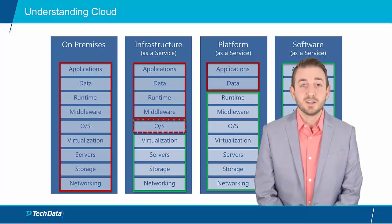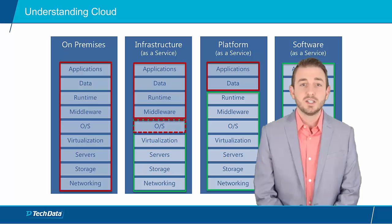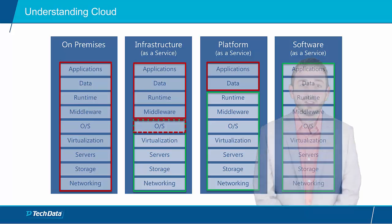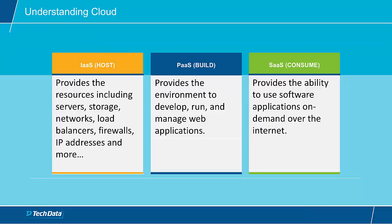It's very important to understand the differences between the infrastructure, platform, and software as a service models, as these are the core models that all the others are based on. To review: Infrastructure-as-a-Service, or IaaS, is where the customer outsources the responsibility and maintenance for all typical infrastructure components to an external cloud provider. Platform-as-a-Service, or PaaS, provides the platform to develop, run, and manage web applications without the complexity of building and maintaining the underlying infrastructure. Software-as-a-Service, or SaaS, provides the ability to use software applications on demand delivered by the cloud provider over the internet.